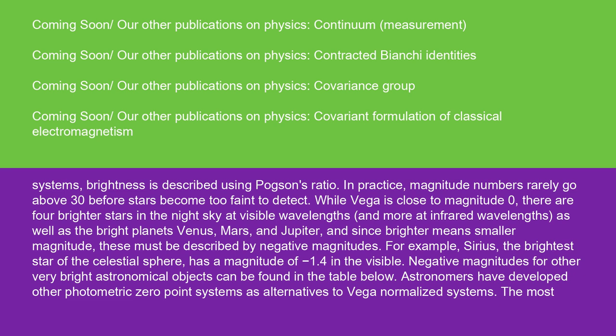For example, Sirius, the brightest star of the celestial sphere, has a magnitude of -1.4 in the visible. Negative magnitudes for other very bright astronomical objects can be found in the table below.